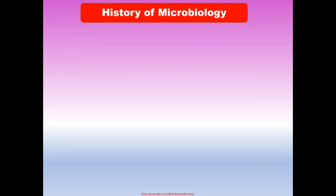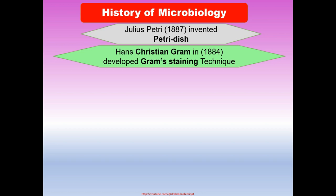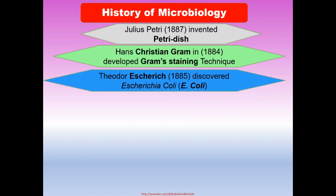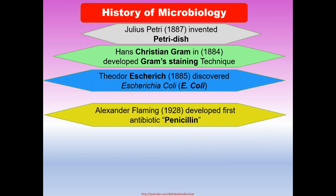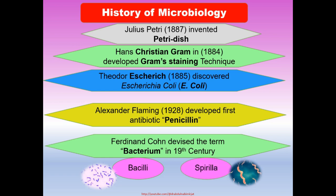The science of microbiology has many more discoveries. Hans Christian Gram in 1884 developed the Gram staining technique. Theodore Escherich in 1885 discovered Escherichia coli. Alexander Fleming in 1928 developed the first antibiotic, penicillin. Ferdinand Cohn devised the term 'bacterium' in the 19th century and categorized bacteria as bacterium meaning short rod, bacilli meaning longer rods, and spiral forms.